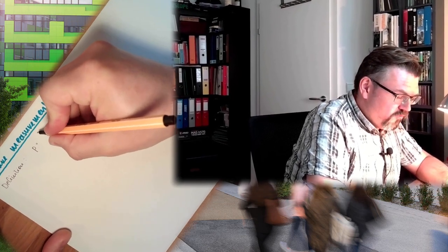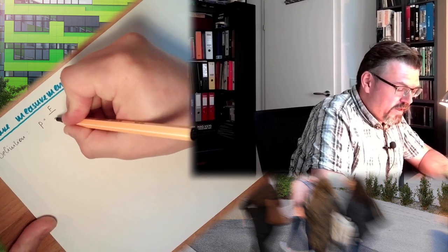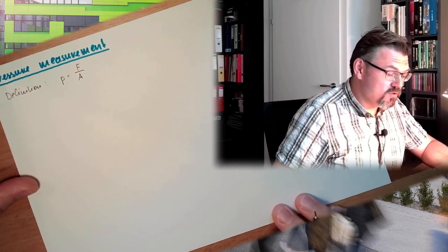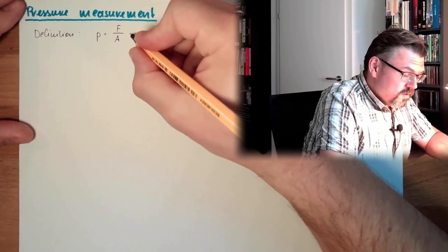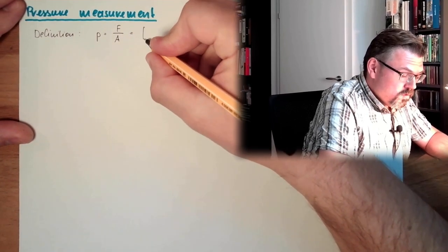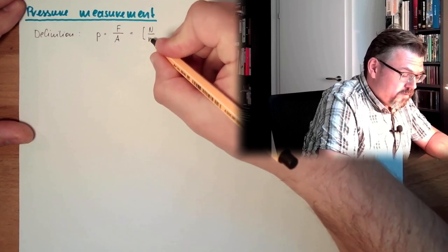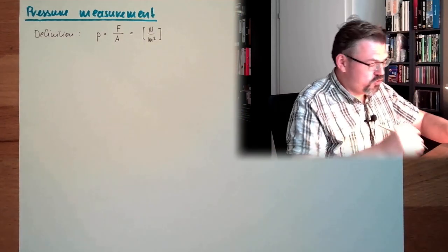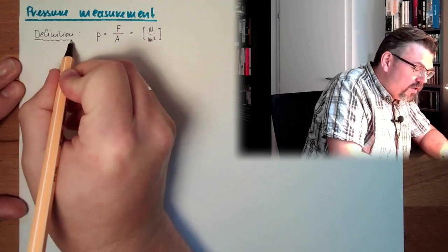Pressure. What is pressure? Well, it's not that easy to answer. Actually, the definition of pressure is very easy. The pressure P is the force applied to a certain area divided by this area, so it's usually Newton per square meter. This is the definition of pressure. Does not sound too complicated, right?